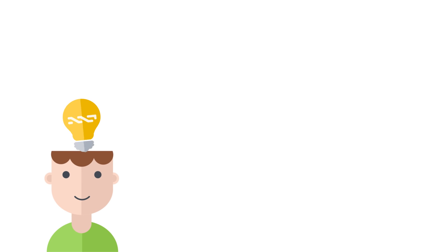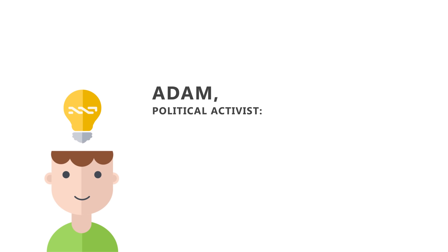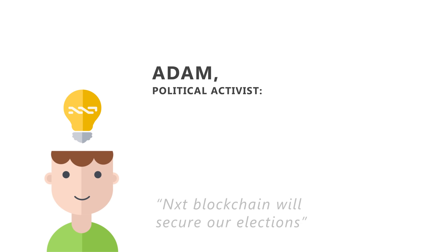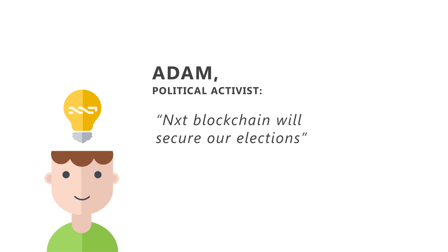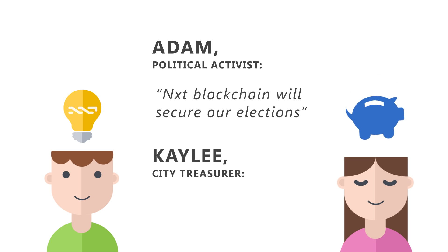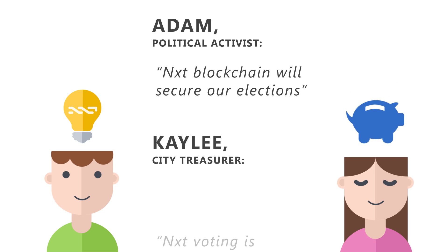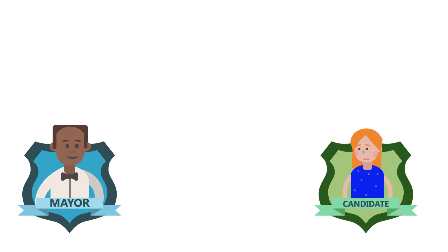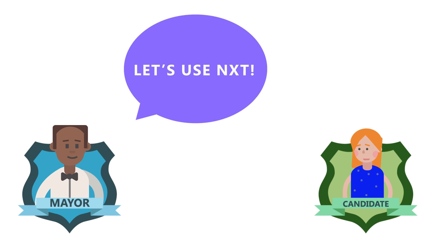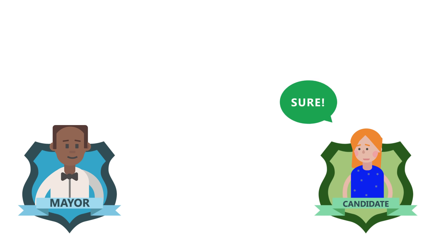Adam, a political activist, recommends the use of the voting feature on the NXT blockchain and demonstrates how it can secure their elections. Kaylee, the town treasurer, is also interested as the cost for running the election is significantly reduced. Nathan and Gina agree and the elections proceed accordingly.